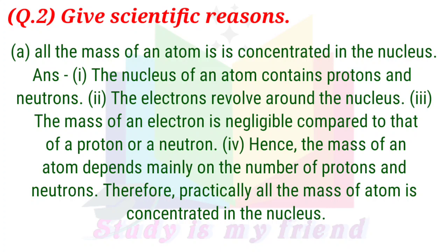Question 2A: All the mass of an atom is concentrated in the nucleus. Answer: The nucleus of an atom contains protons and neutrons. The electrons revolve around the nucleus. The mass of an electron is negligible compared to that of a proton or a neutron. Hence, the mass of an atom depends mainly on the number of protons and neutrons. Therefore, practically all the mass of an atom is concentrated in the nucleus.